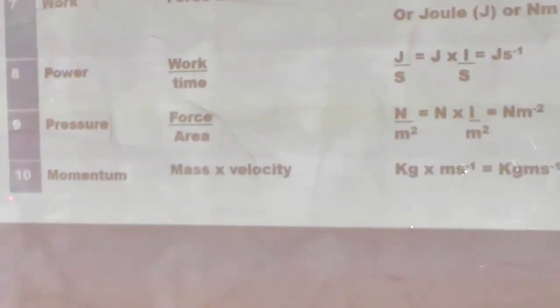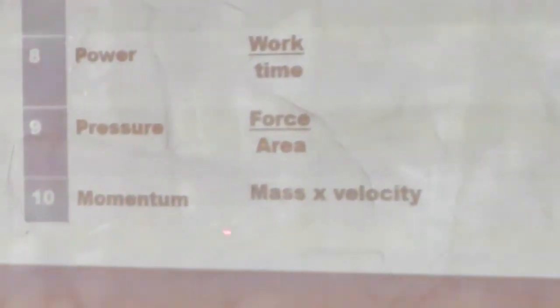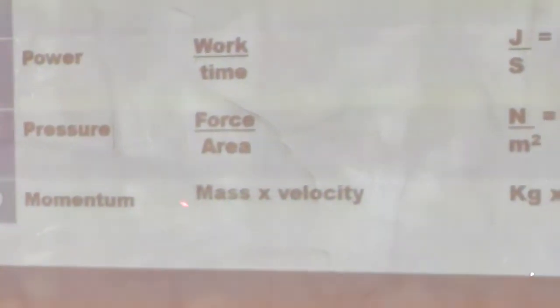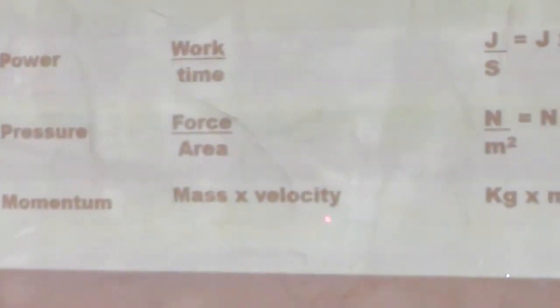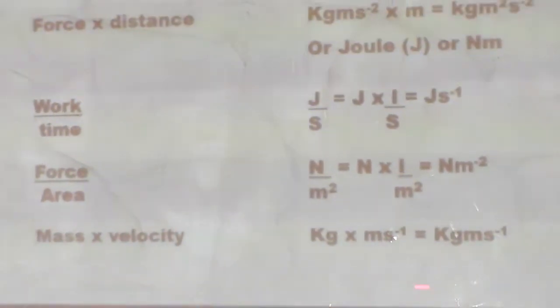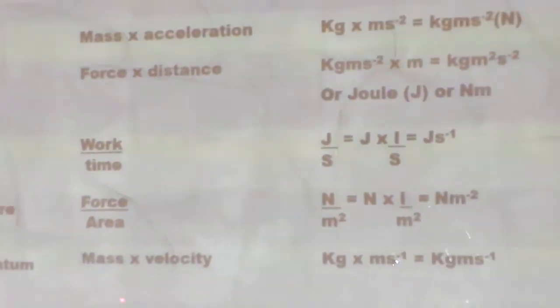Finally, let us look at momentum. Momentum is the product of mass and velocity. The unit of mass is kg, and velocity is meter per second. When you multiply kilogram by meter per second, you arrive at kilogram meter per second, which is the SI unit of momentum.